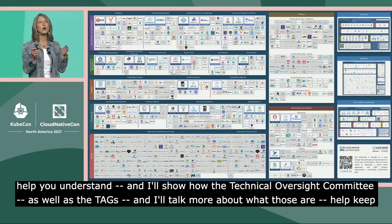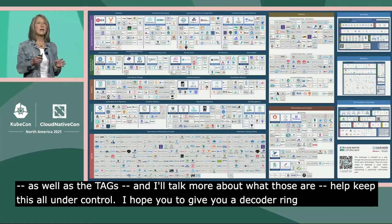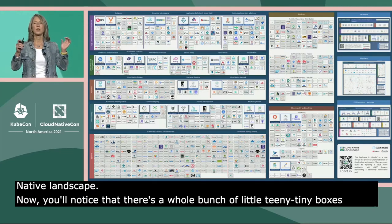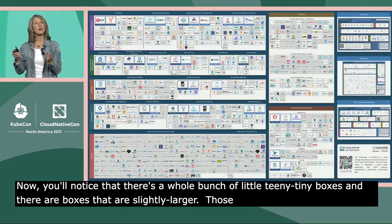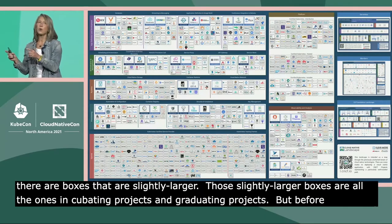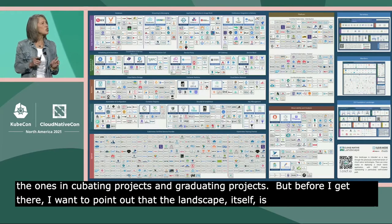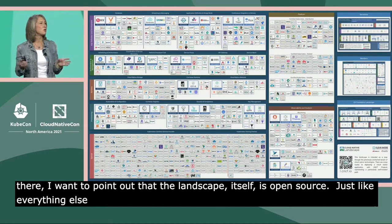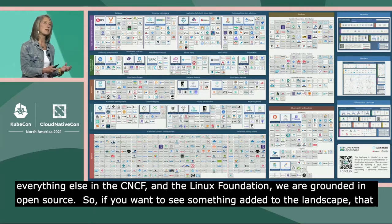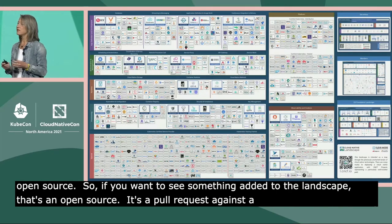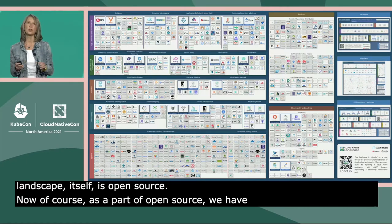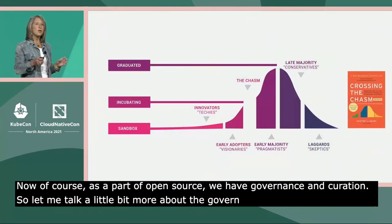You'll notice there are a whole bunch of tiny boxes, and some boxes that are slightly larger. Those slightly larger boxes are all the incubating and graduated projects. I want to point out that the landscape itself is open source — just like everything else in the CNCF and the Linux Foundation, we are grounded in open source. If you want to see something added to the landscape, it's a pull request against a repository. Even the landscape itself is open source, and as part of open source we have governance and curation.